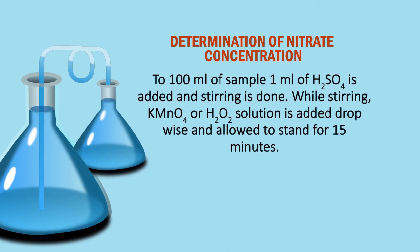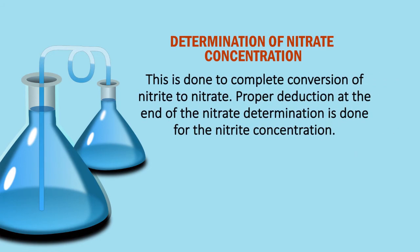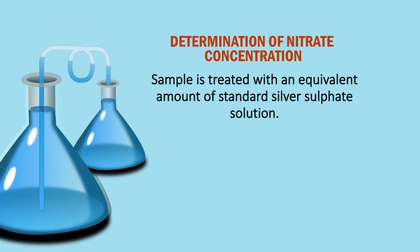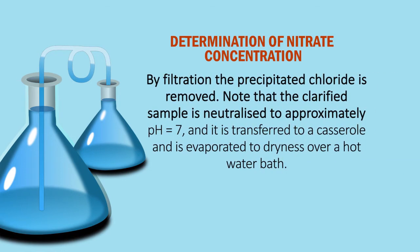Determination of nitrate concentration: to 100 ml of sample, 1 ml of HCl is added and stirring is done. While stirring, KMnO4 or hydrogen peroxide solution is added dropwise and allowed to stand for 15 minutes. This is done to complete the conversion of nitrite to nitrate. Proper reduction at the end of the nitrate determination is done for the nitrite concentration. The sample is treated with an equivalent amount of standard silver sulfate solution, and by filtration the precipitated chloride is removed. The clarified sample is neutralized to approximately pH 7 and transferred to a casserole, then evaporated to dryness over a hot water bath.